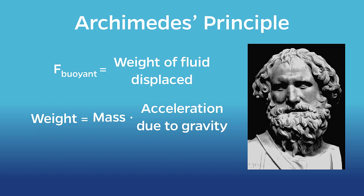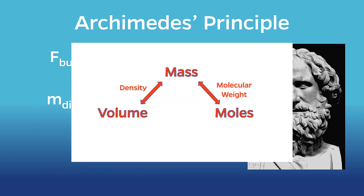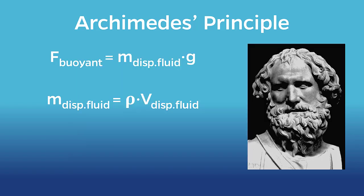From physics, we know that the weight of anything is the mass times the acceleration due to gravity. Therefore, the weight of the fluid displaced is the mass of the fluid displaced times g. But what about the mass of fluid displaced? Now we can apply some chemical engineering knowledge. Remember back in episode 5 of this series? We can express the mass displaced as the density times the volume displaced.